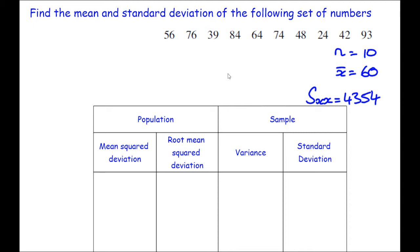Okay, so we'll start with the mean squared deviation. The mean squared deviation, to find it, its formula is simply S_xx divided by n.